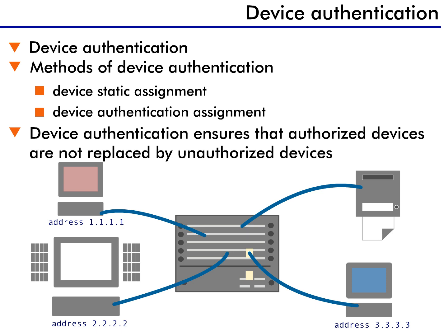With authentication, though, each device is verified. So, as soon as the authorized printer is disconnected and the PC is connected, the device's identity is re-verified. The illegal device is detected, the port is disabled, and the network management software generates an alert about an unauthorized device.